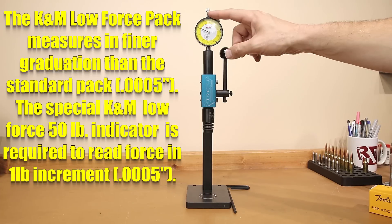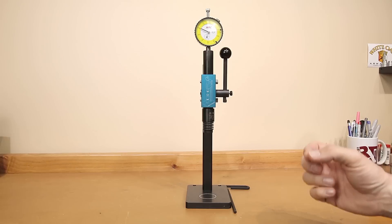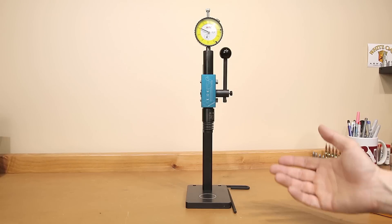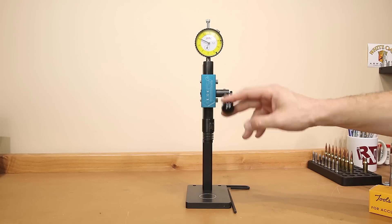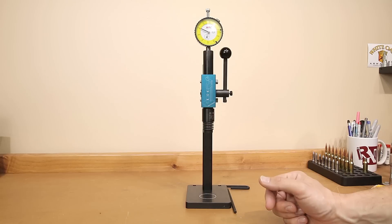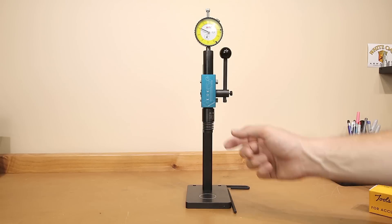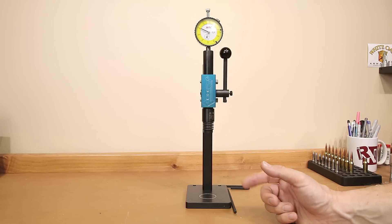The low force pack also requires a different indicator that reads one pound and half thousandths increments. I don't have one of those to show you, but if you look on their website, I'm sure you can find it. The actual press stroke from top to bottom is one inch. The total working height without the force pack installed is zero to seven and a half inches. But when the force pack is installed, this is reduced from zero to six inches.